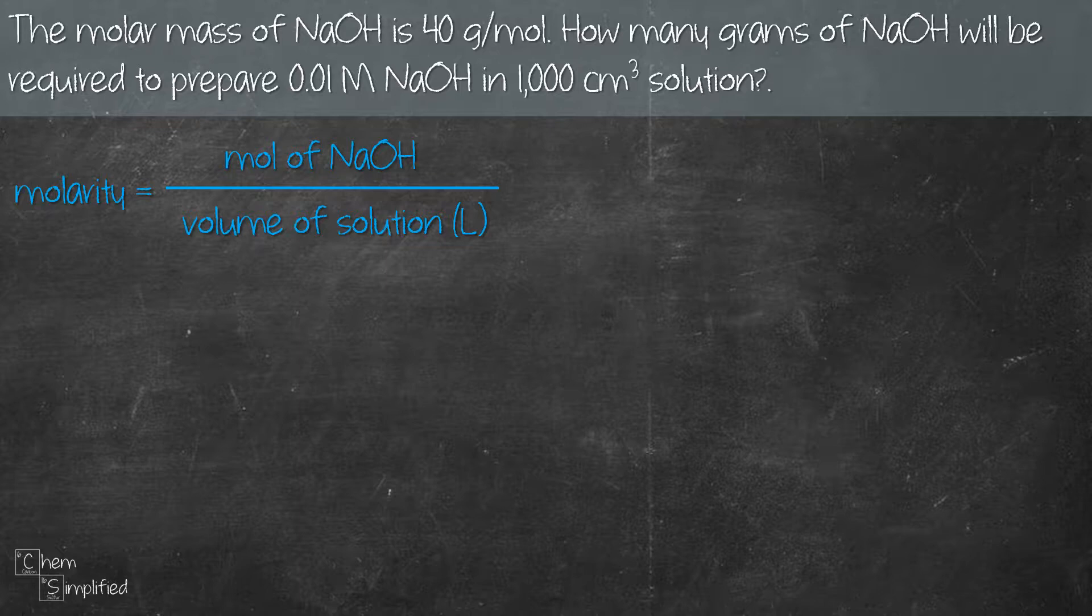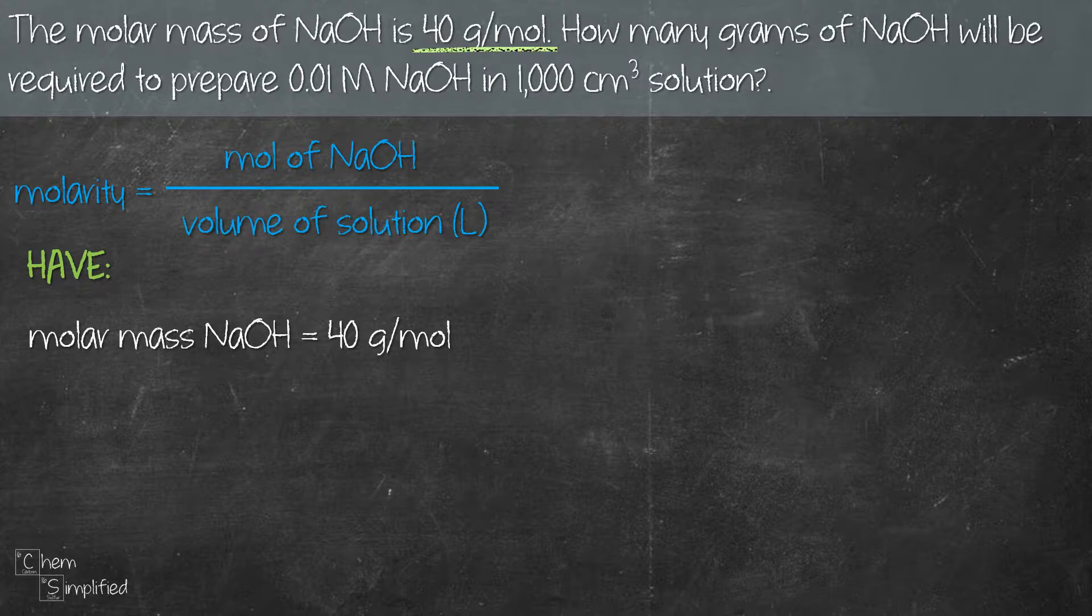Before we continue, let's list down all the information that we have. We have the molar mass of NaOH, which is 40 grams per mole. The volume is also given, it's 1000 cm³.